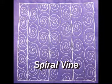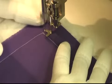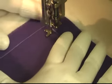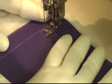This is the free motion quilting tutorial for Spiral Vine. This is stitched by first giving yourself a little space along the edge of your quilting space and then stitching into a spiral.